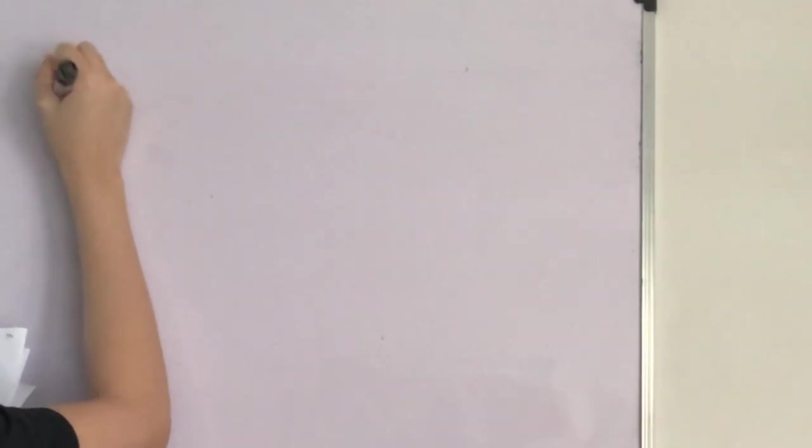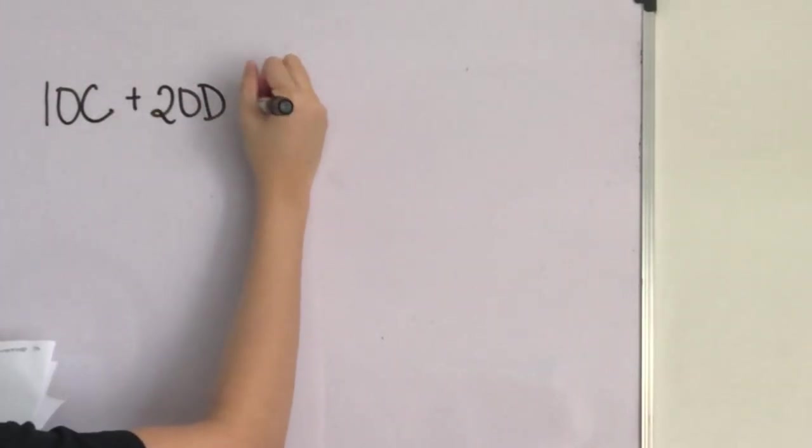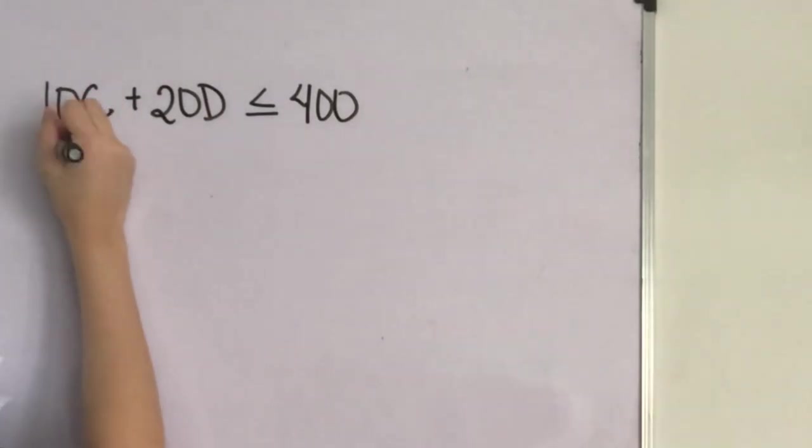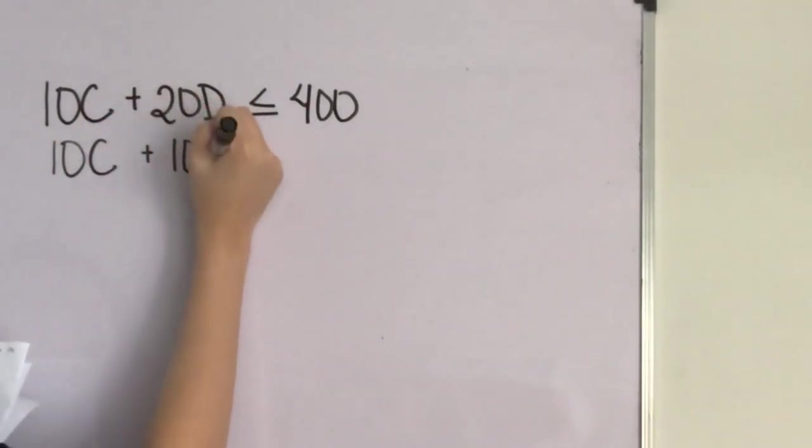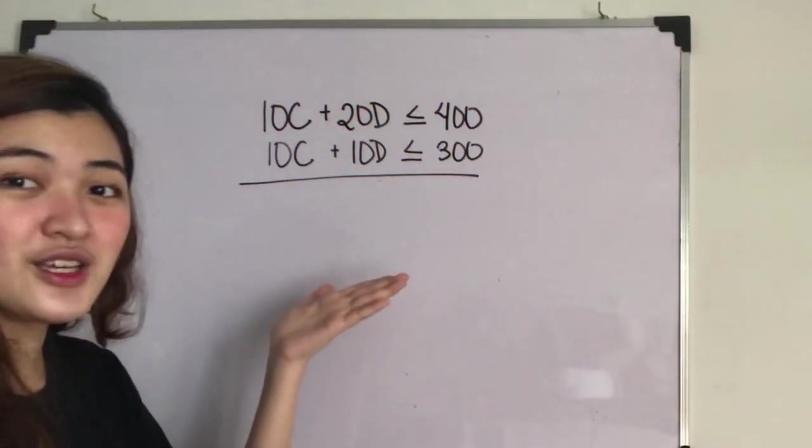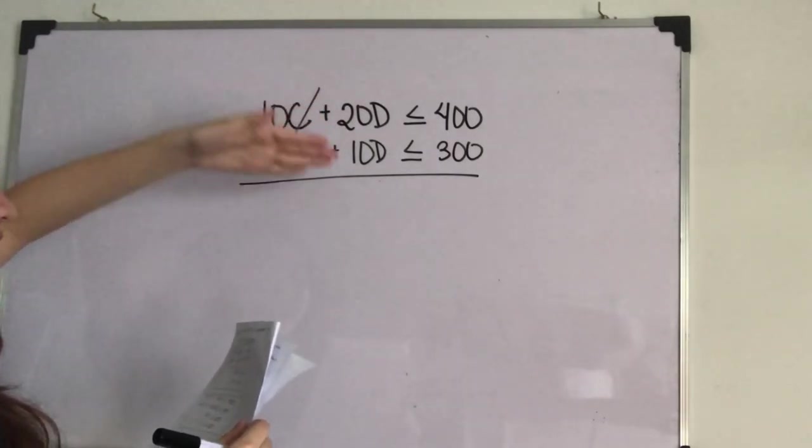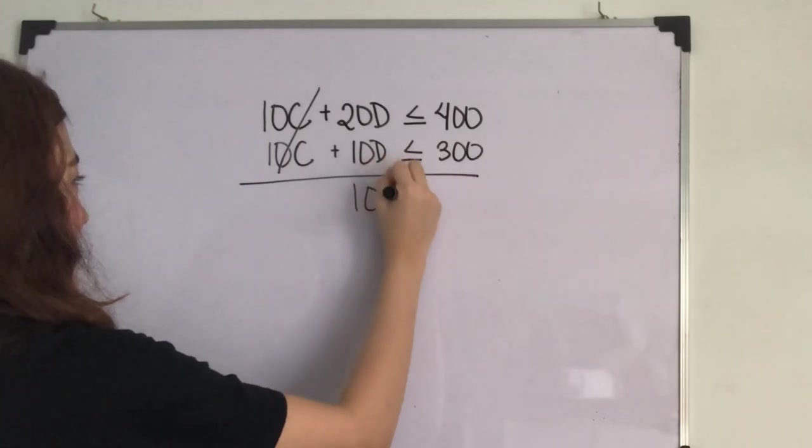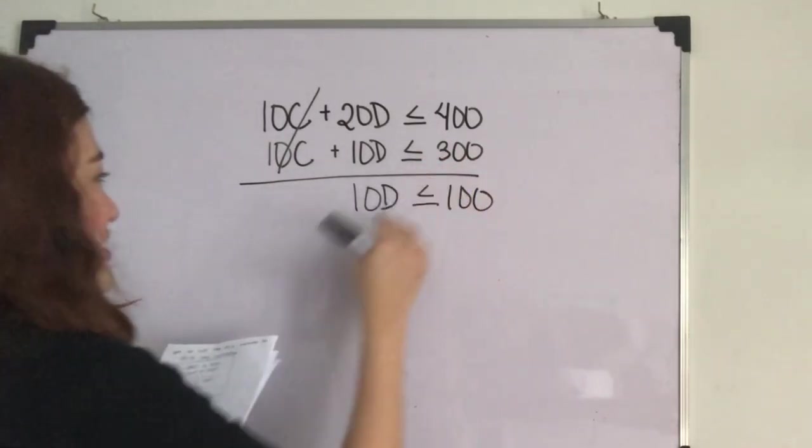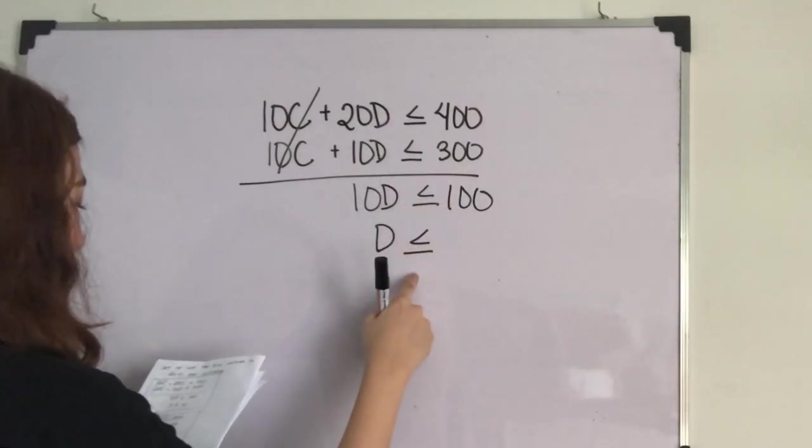We have 10C plus 20D is less than or equal to 400, then we have another 10C plus 10D is less than or equal to 300. As you can see, we can eliminate the two 10Cs. Next, 20D and 10D, what we will have is 10D. 400 and 300, we will have 100. So we could see that 10D is less than or equal to 100, which now gives us D is less than or equal to 10.